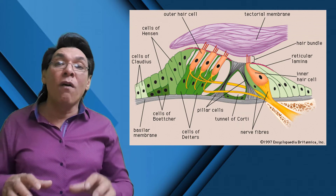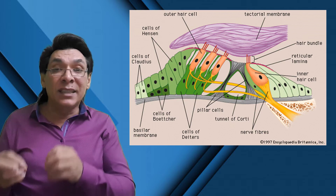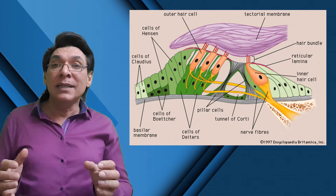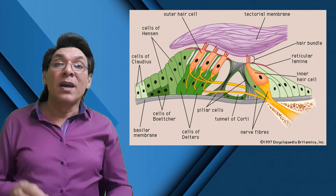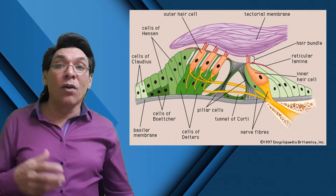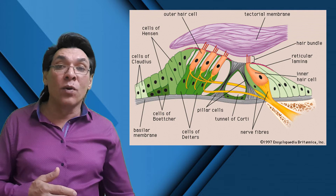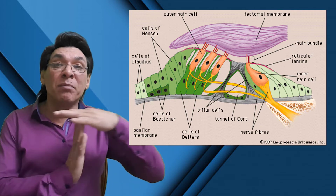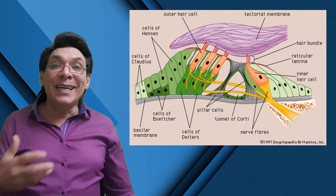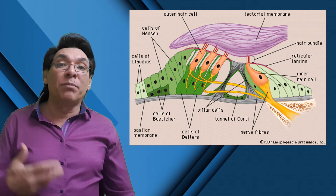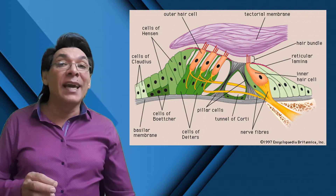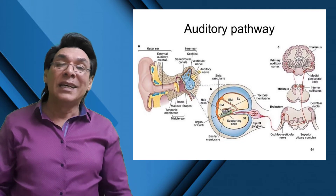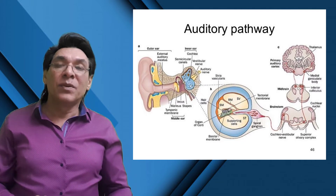Vibrations of the ossicles in the middle ear cause movement of fluid in the inner ear, resulting in vibrations of the basilar membrane and bending of the hair cells. The hair cells on the organ of Corti bend against the tectorial membrane, and a nerve impulse is initiated on the cochlear branch of cranial nerve 8.